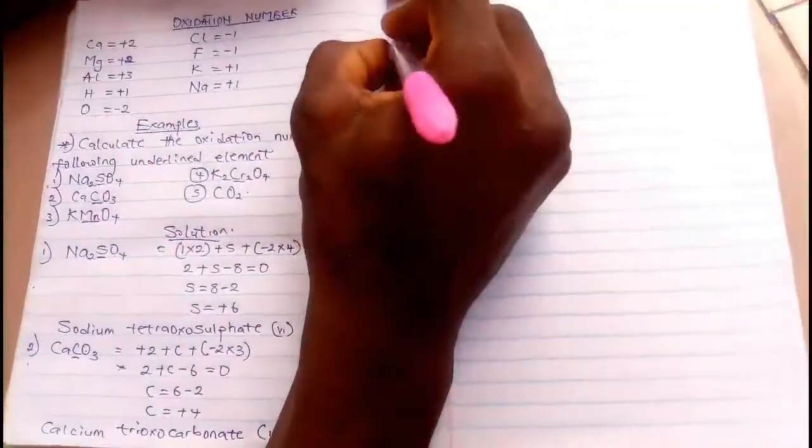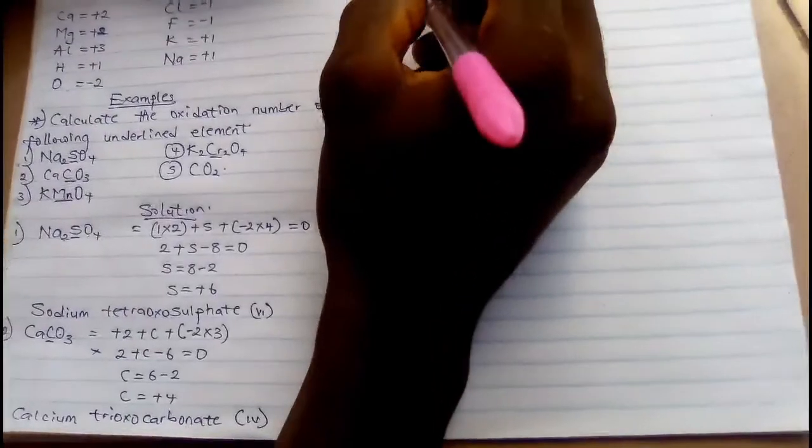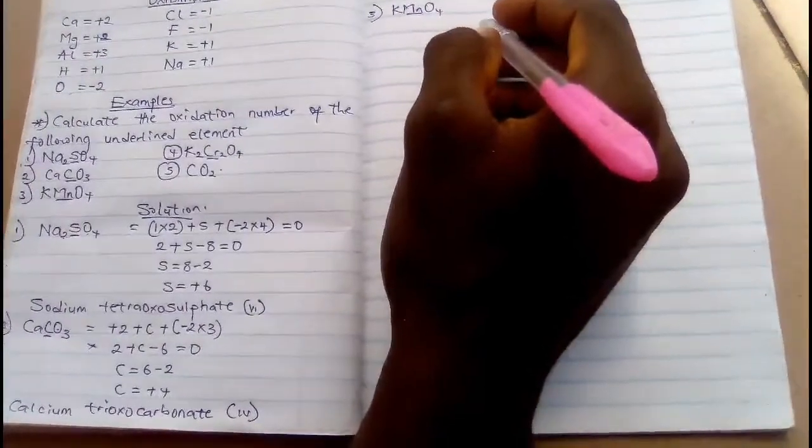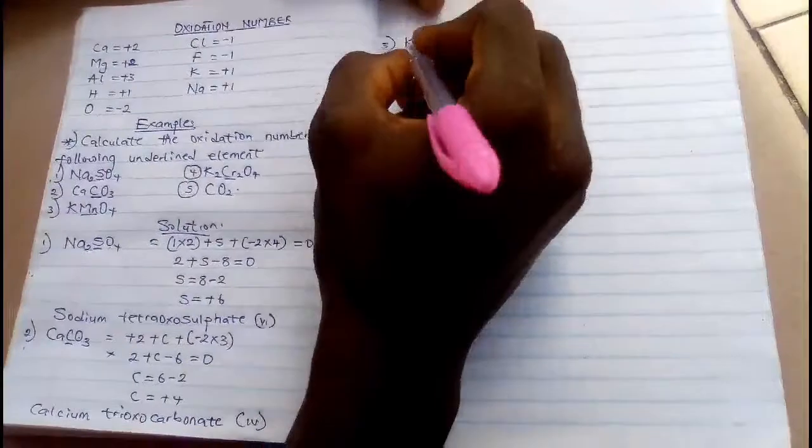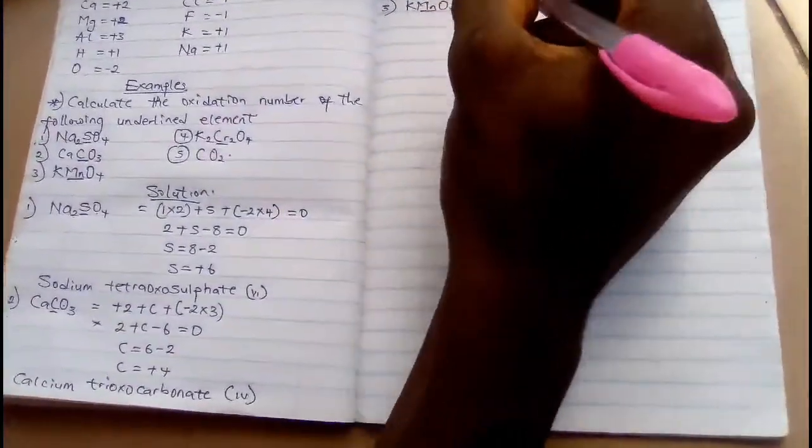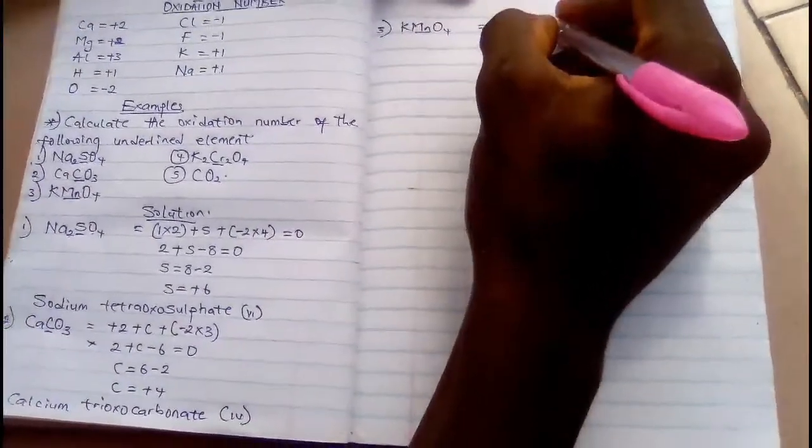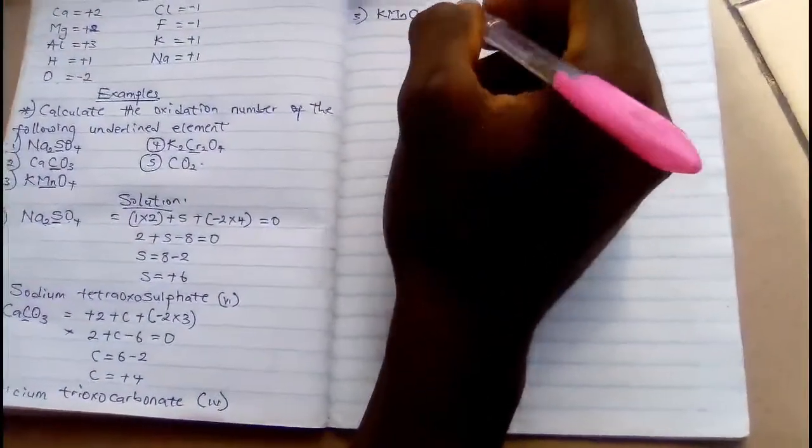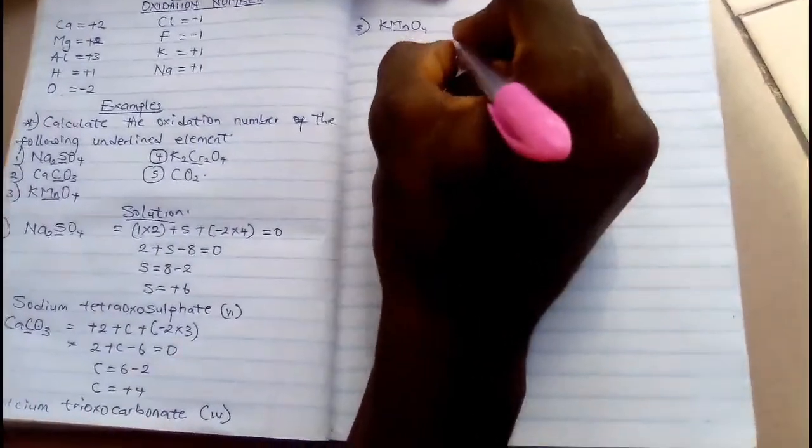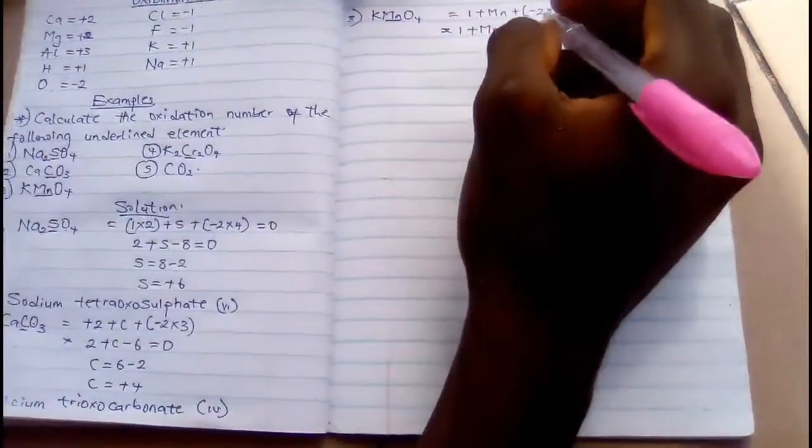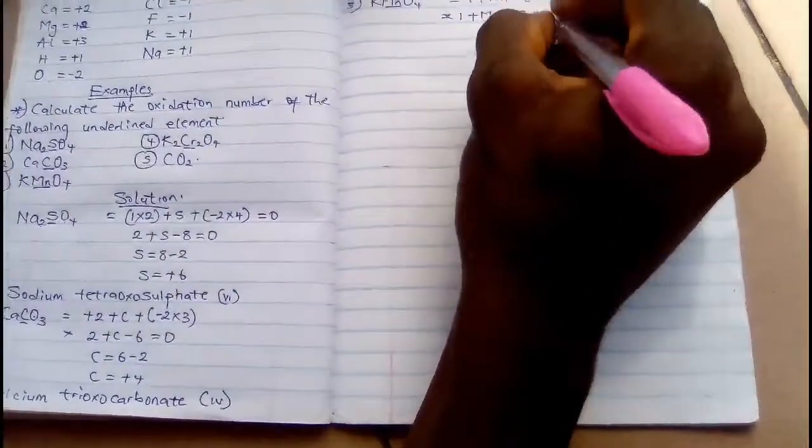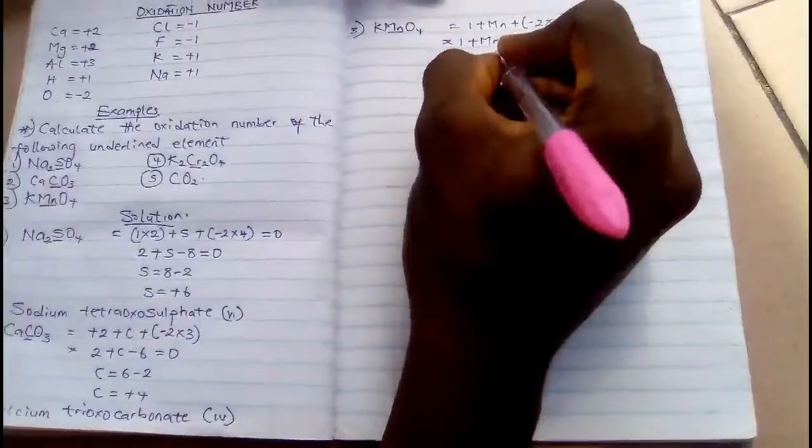So let me quickly go to number three, KMnO₄. We are looking for Mn. So since you are looking for Mn, this is what you are going to do: K is +1, Mn is unknown, plus brackets -2 times 4, which equals 1 + Mn. Please don't forget to equate to zero. It will give you -8 = 0.